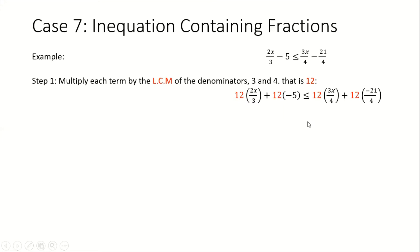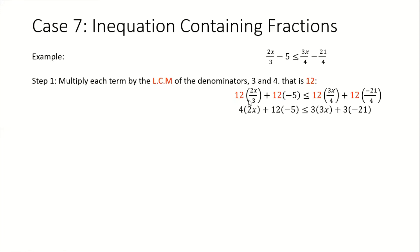This allows us to get rid of the fractions. We simplify by using each denominator to divide the lowest common multiple of 12. So 3 into 12 gives us 4, and we end up with 4 times the numerator, which is 2x.